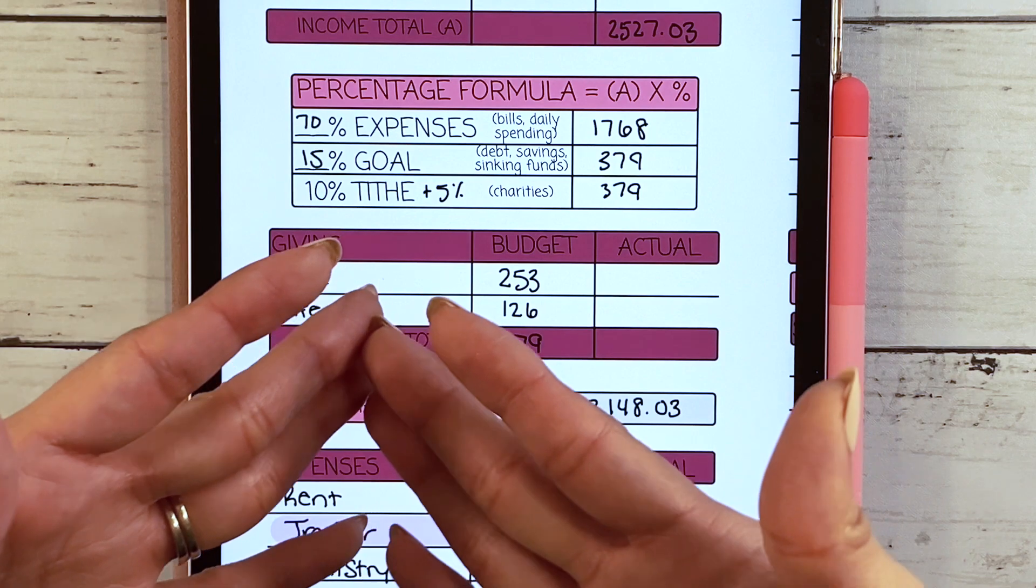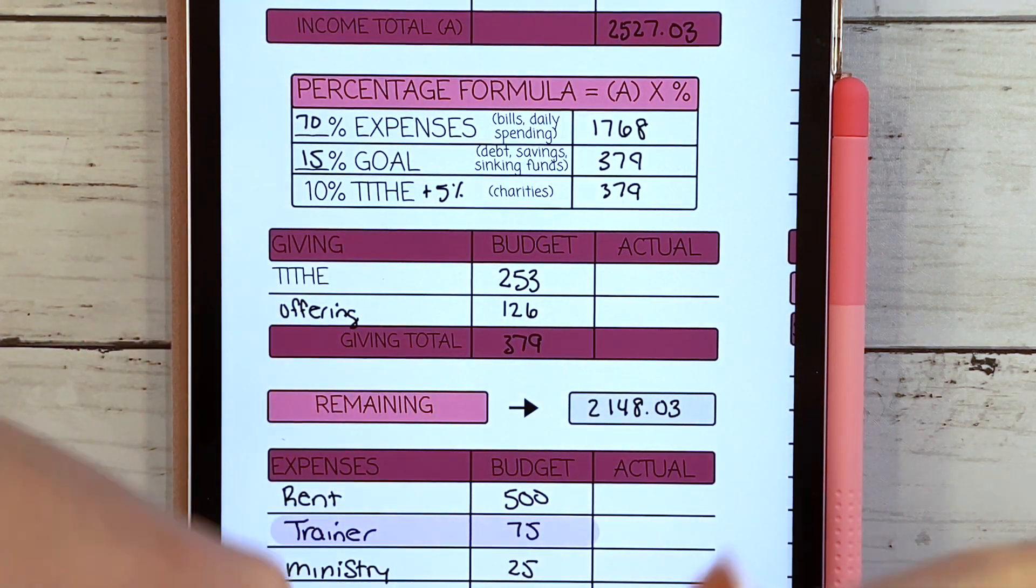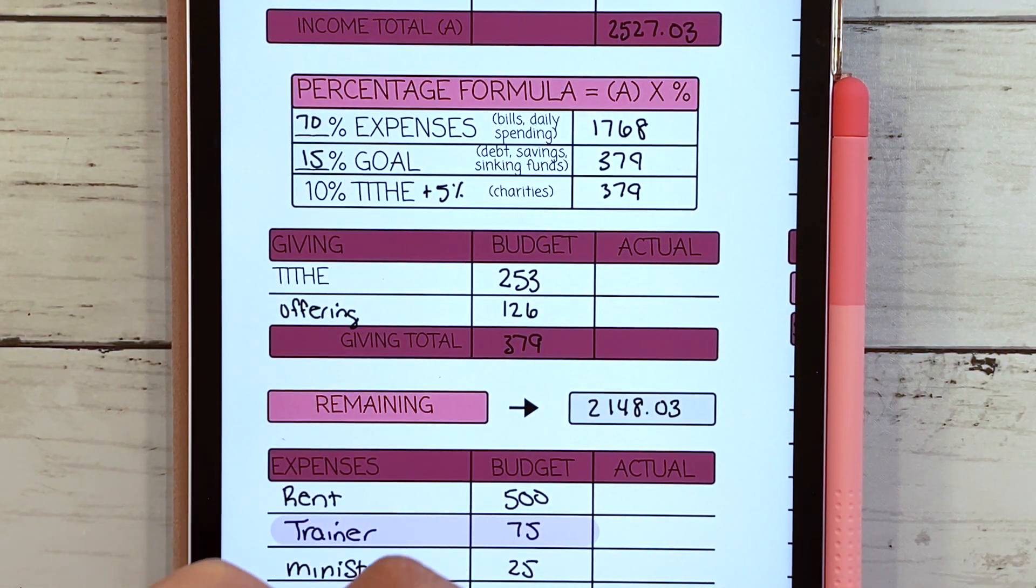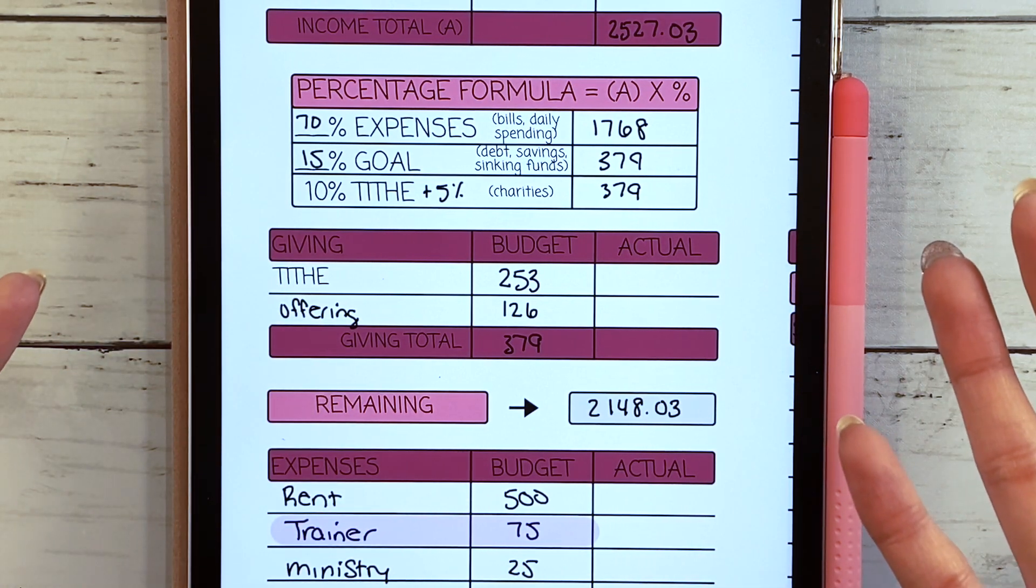We break down our income into three different categories. The first one is the expenses, the second category is our goal, and then the last category is tithe.